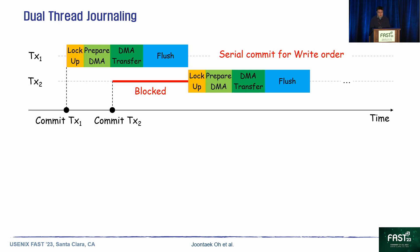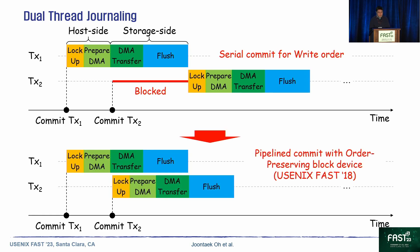The first technique is dual-thread journaling. As mentioned before, every journal commit is serialized in EXT4. For the concurrent journal commit, we separated the journal commit into two parts: host-side work, including lockup and preparing DMA, and storage-side work, including DMA transfer and flush. We pipelined these two works. We guaranteed the right order — previously guaranteed by serial commit — using an order-preserving block device. With dual-thread journaling, we can commit multiple transactions concurrently.